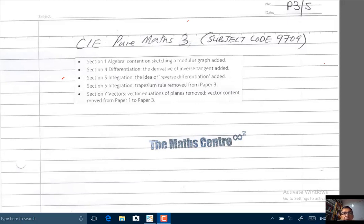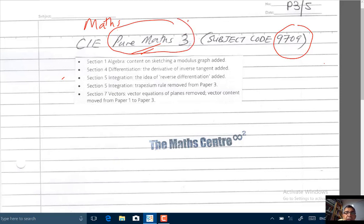In this video, we are going to talk about the changes to the Pure Maths Paper 3 Syllabus of the CIE exams, the Cambridge International exams, the Maths exams, subject code 9709. The changes to the syllabus start from the year 2020 onwards. We are looking at the changes to the Pure Maths Paper 3 Syllabus, starting from the year 2020.